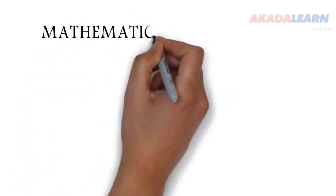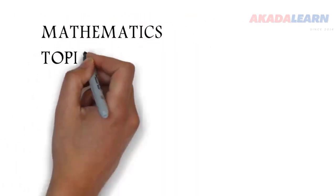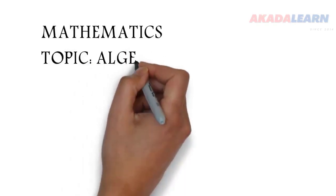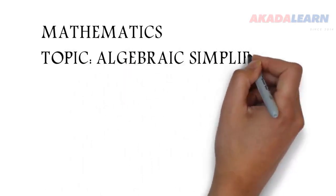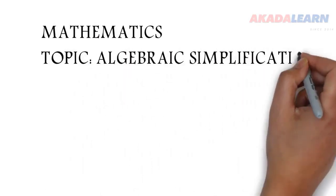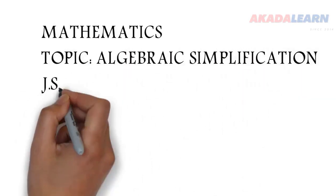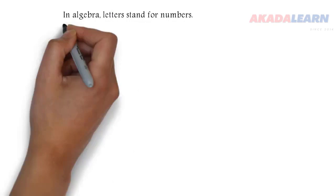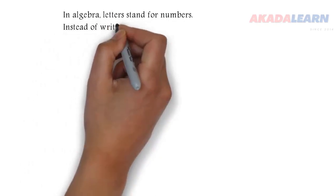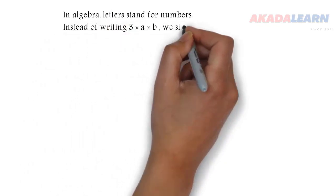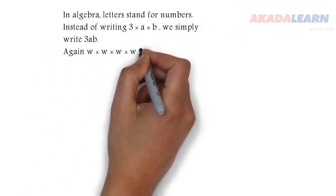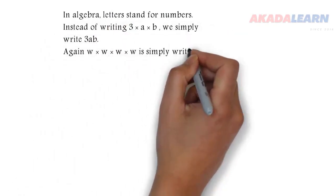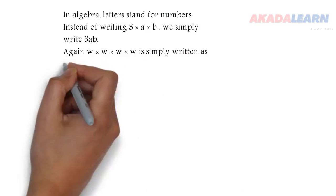You are welcome to class. Today we are going to be seeing algebraic simplification. So in algebra, letters actually stand for numbers. Instead of saying 3 times A times B, we just say 3AB.